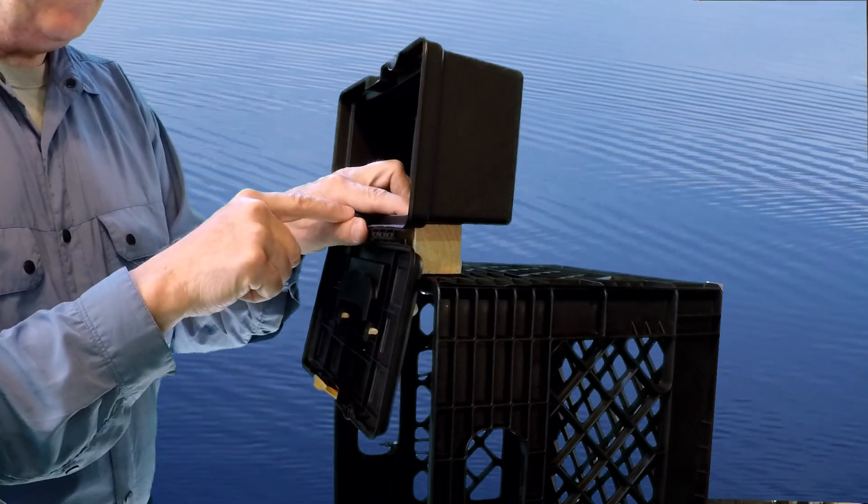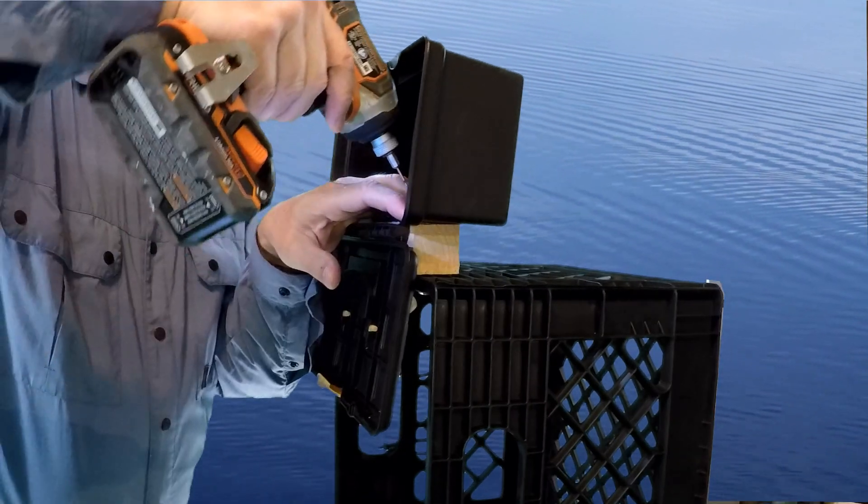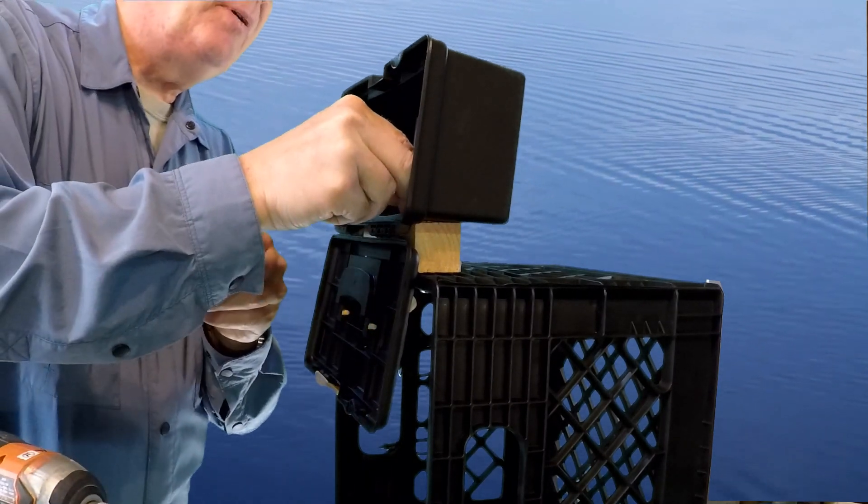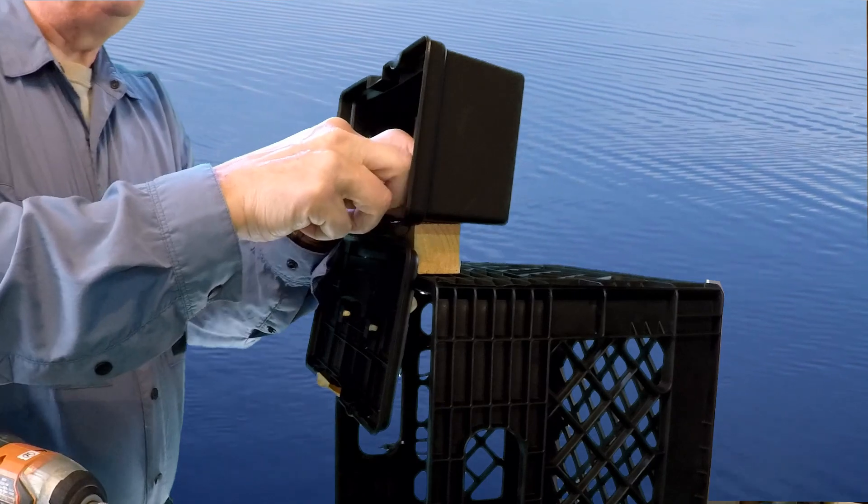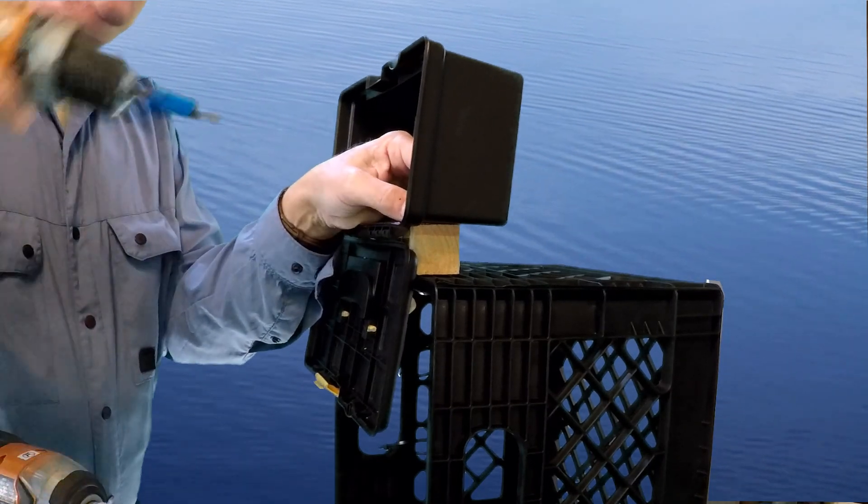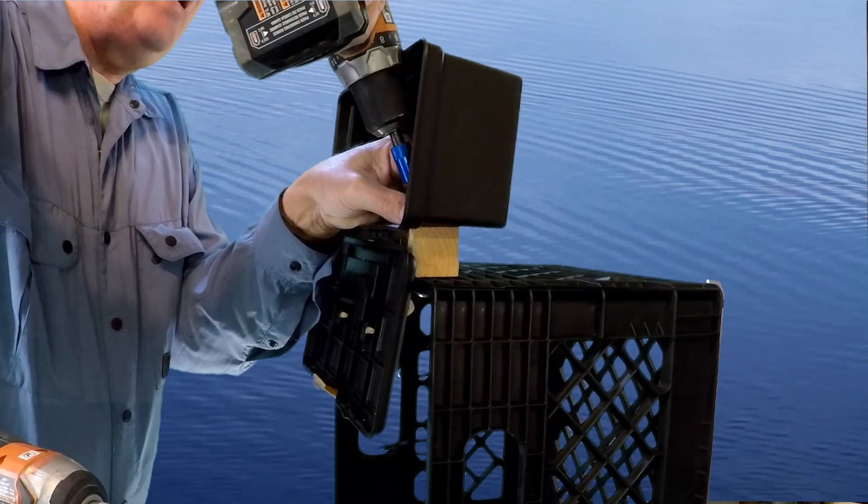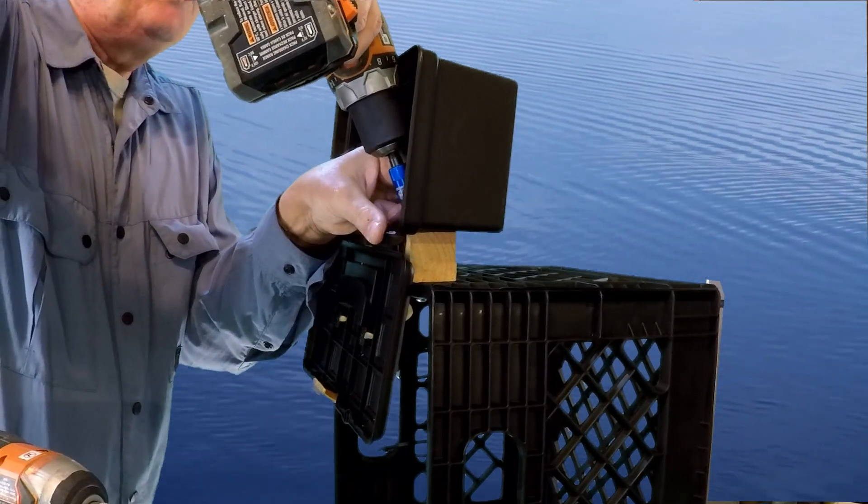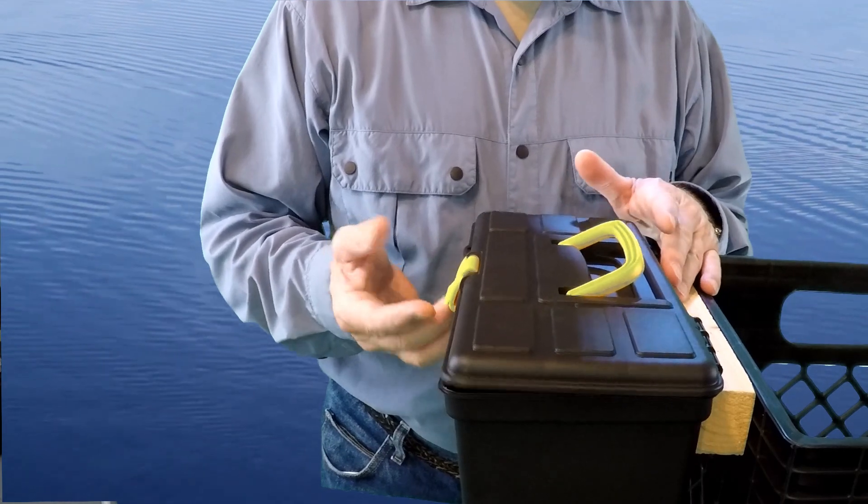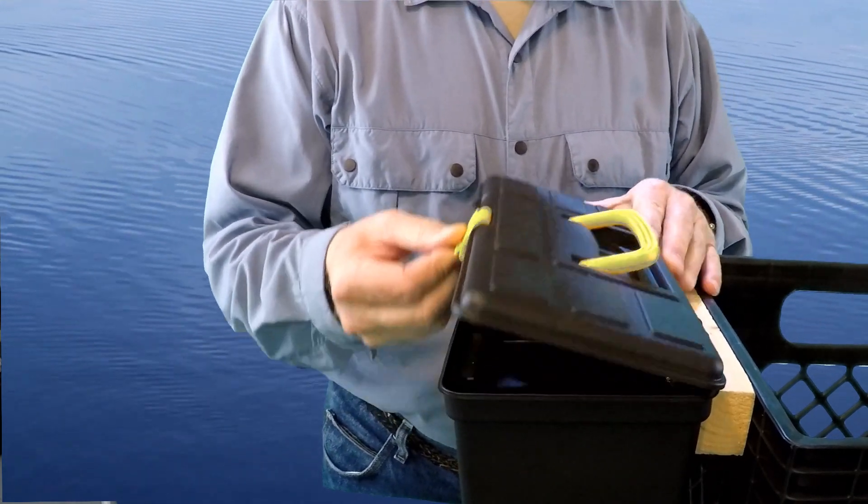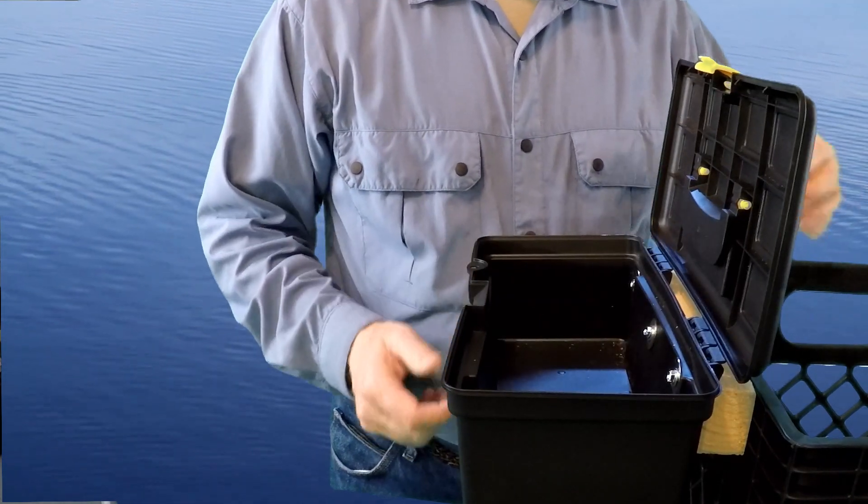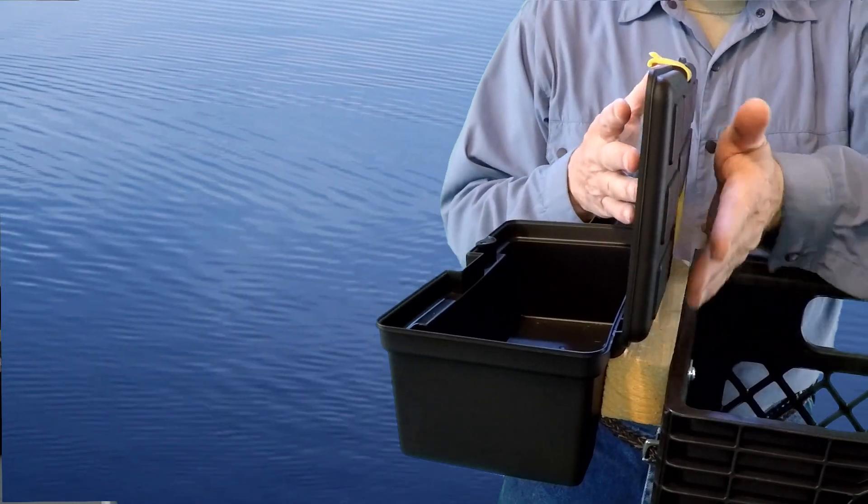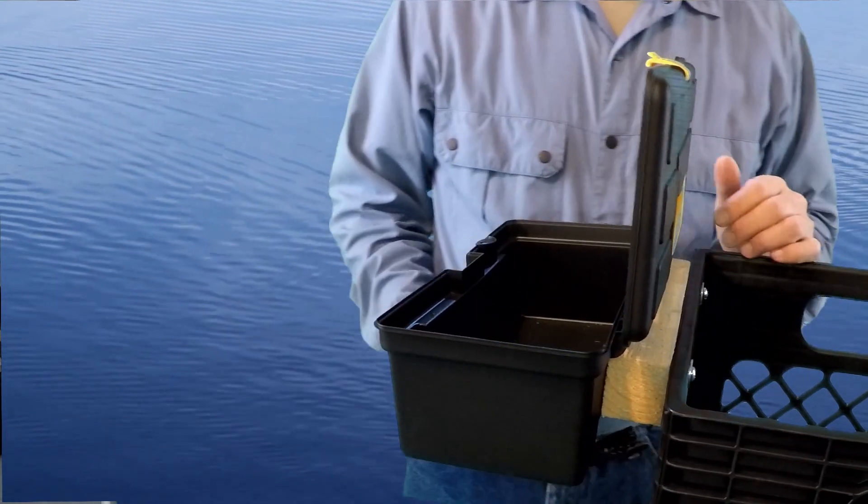Since these are going in on an angle, I'm using self-tapping screws. That way I can just drill the hole through the plastic and then have the self-tapping screw go in at the angle that I can get to. Okay, I've got it screwed on. I can still latch it, and I can open the toolbox and note that there is still plenty of room between the edge of the milk crate and the top of the toolbox.